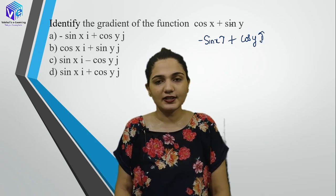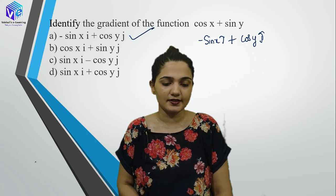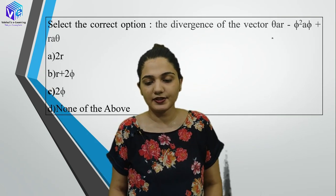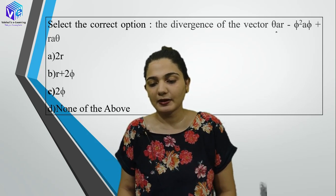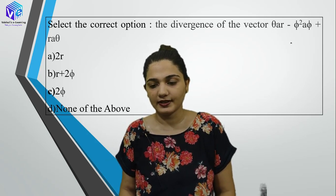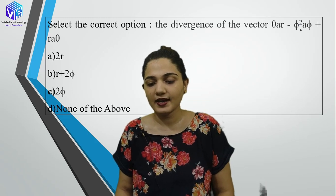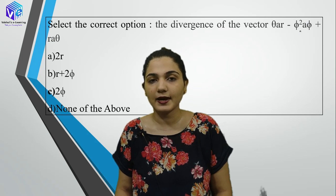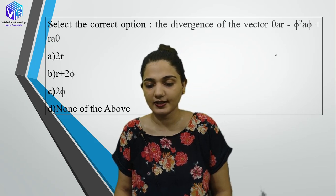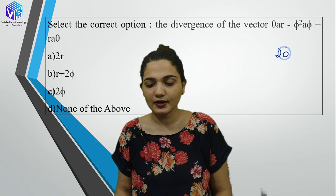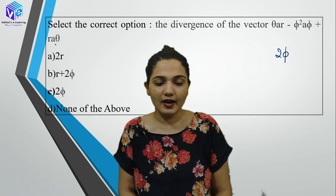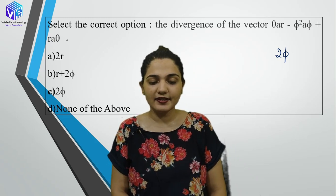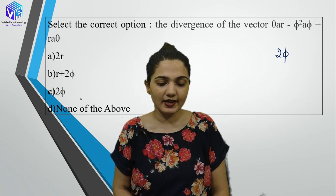Next question: find the divergence of a vector given in cylindrical/spherical form. For the aᵣ component, differentiate with respect to r. For the φ² aᵩ component, differentiate with respect to φ — giving 2φ. For the r aθ component, differentiate with respect to θ — giving 0. So the answer is C.